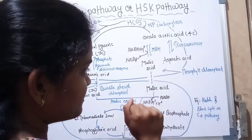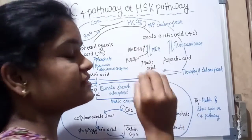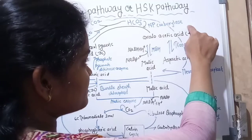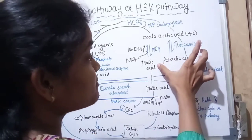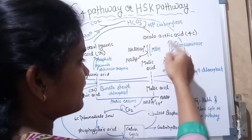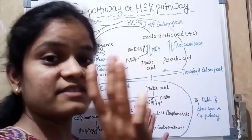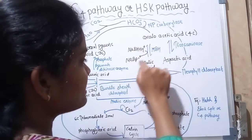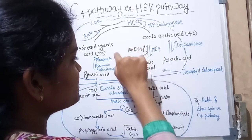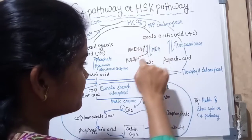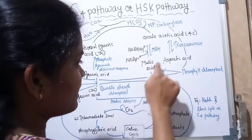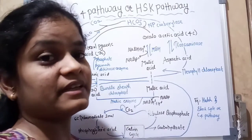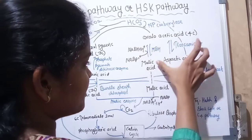Oxaloacetic acid can then be converted to either aspartic acid or malic acid, depending on which enzyme is present in the chloroplast. If the enzyme transaminase is present, OAA is converted into aspartic acid in a reversible process. If the enzyme malate dehydrogenase is present, OAA is converted into malic acid using the energy carrier NADPH+H⁺. So, depending on the enzyme present, we get either malic acid or aspartic acid in the mesophyll chloroplast.